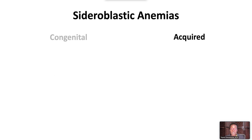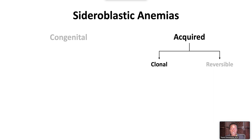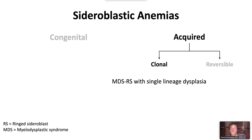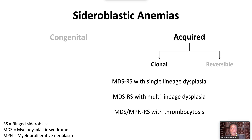Acquired sideroblastic anemias can be clonal or reversible. Clonal sideroblastic anemias are bone marrow stem cell disorders classified as myelodysplastic syndromes (MDS) and/or myeloproliferative neoplasms (MPNs). They include MDS with ring sideroblasts and single-lineage dysplasia, MDS with ring sideroblasts and multilineage dysplasia, and MDS-MPN with ring sideroblasts and thrombocytosis.